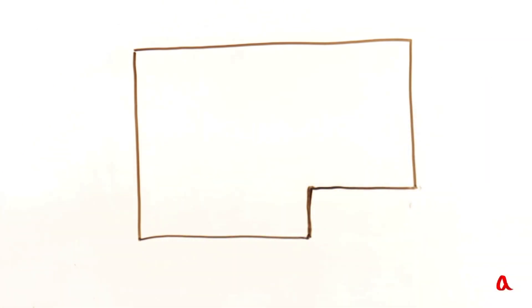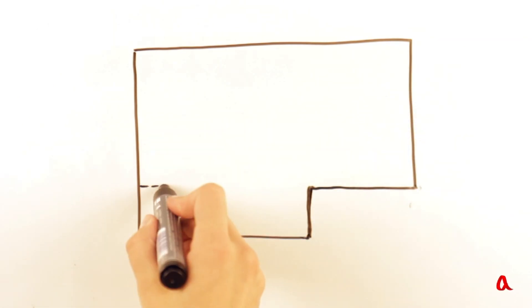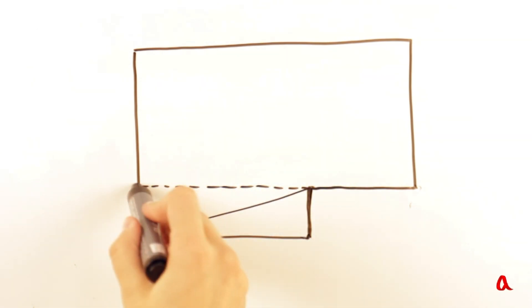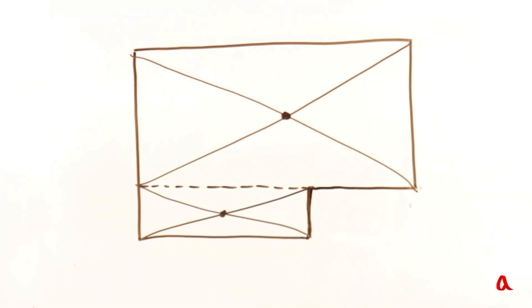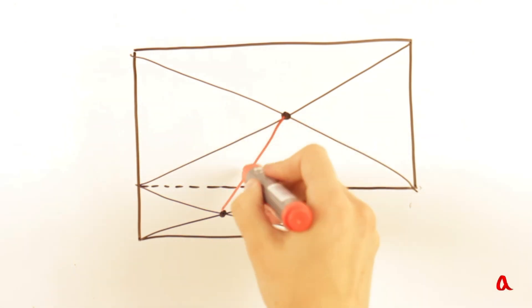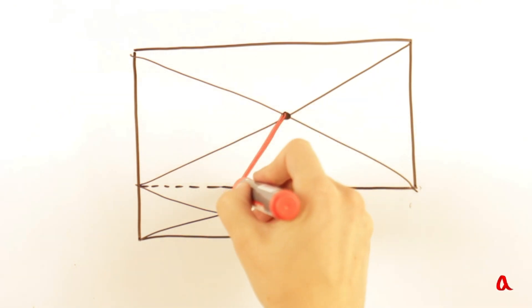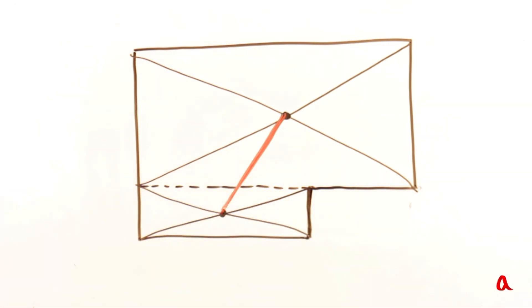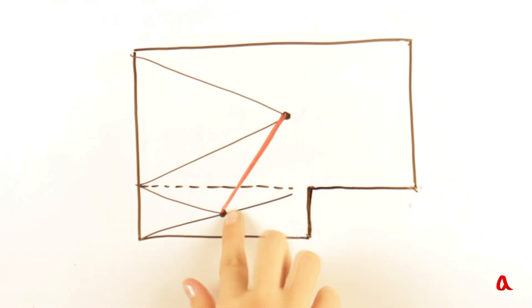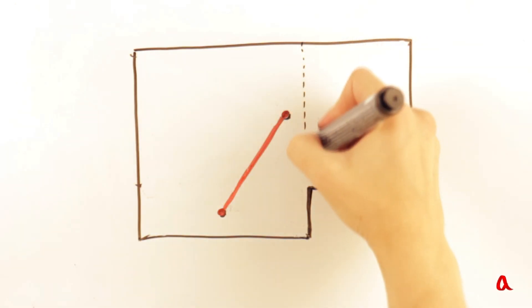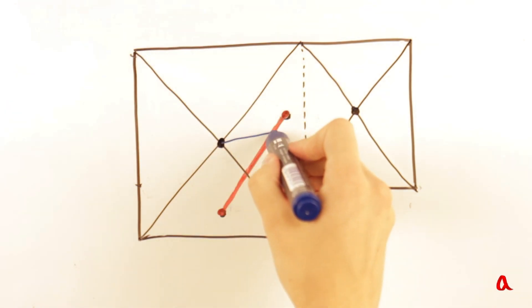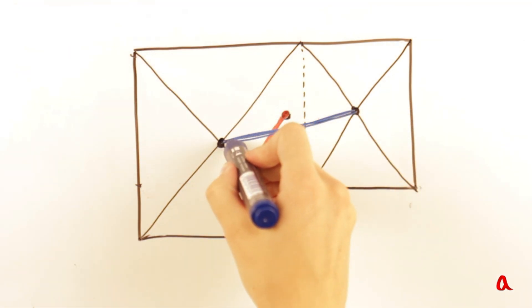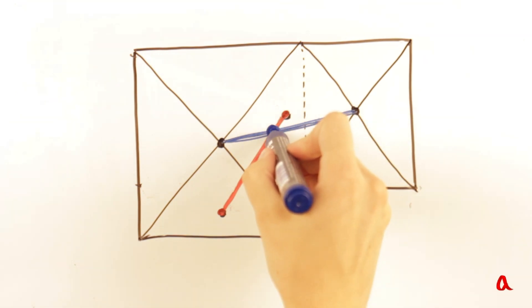Let's establish the gravity center of a rectangular plate with a cut-out corner by means of geometrical reasoning. We divide it into two rectangles — each rectangle's center of gravity is at the intersection point of its diagonals. Therefore, the plate's gravity center must lie on the red interval connecting these two centers. But the plate can be divided into rectangles in a different way, shifting their gravity centers. In that case, the gravity center lies on the blue interval. Since it must lie on both intervals, it is found at their intersection point.